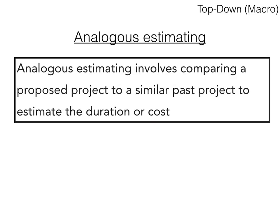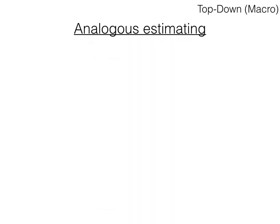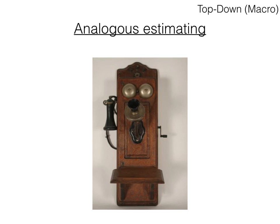Analogous estimating involves comparing a proposed project to a similar past project in order to estimate the duration or cost. Say that at some point in the past we had produced a project involving creation of a telephone. If this project cost $2,000 and took a month to complete, and another customer comes to us with a request to complete a similar telephone, we can tell them it'll take a month and cost about $2,000.